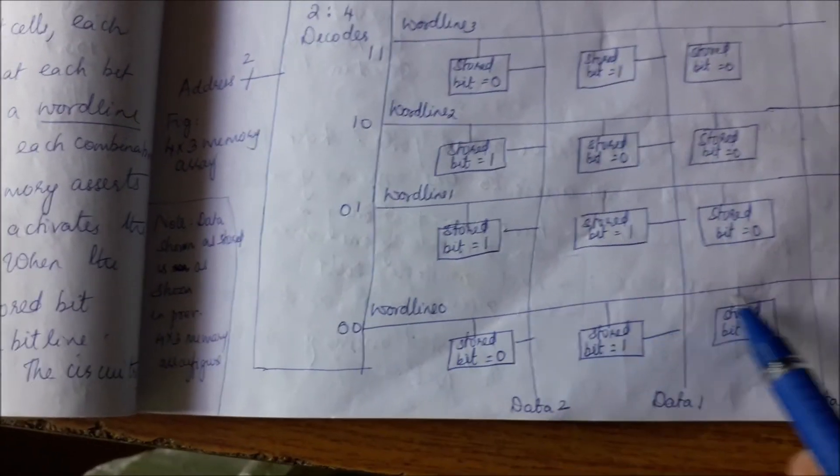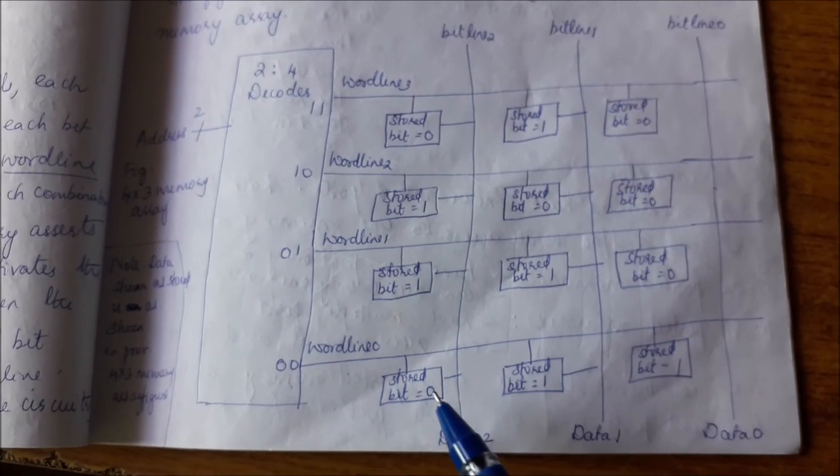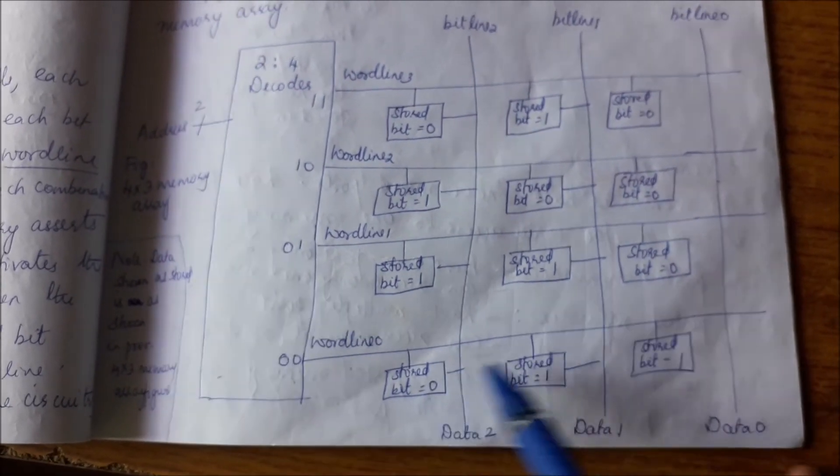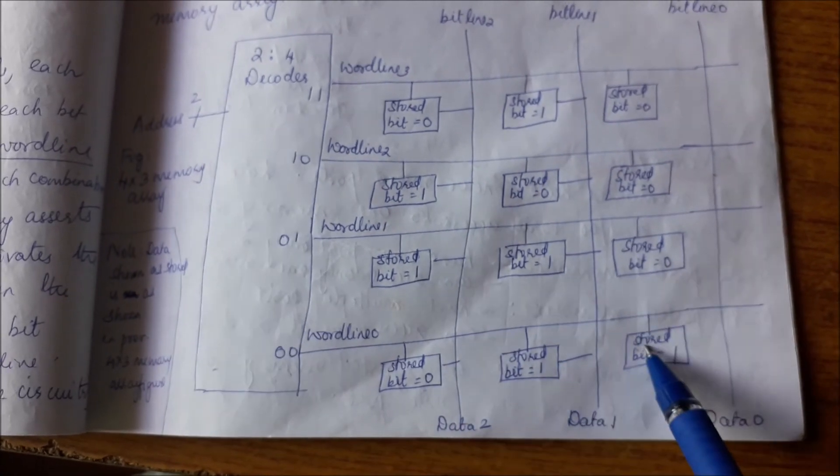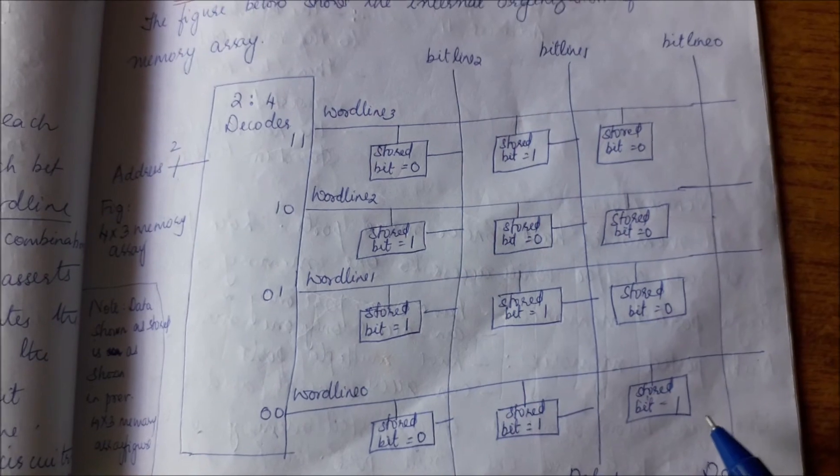This line word line 0 will go high. If it is a read operation that I am going to do, what will happen is whatever data you have stored here—you have stored here 0, 1, 1—each of these data will appear on the respective bit lines.